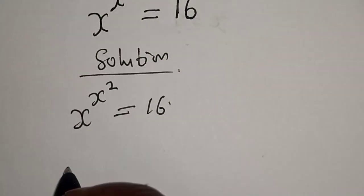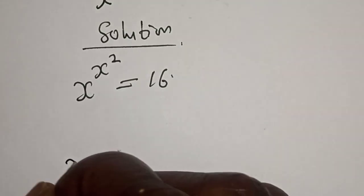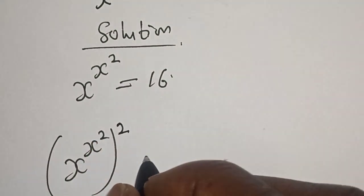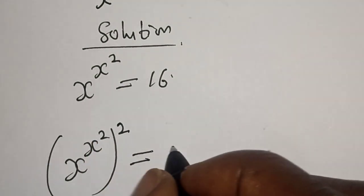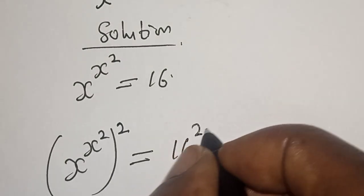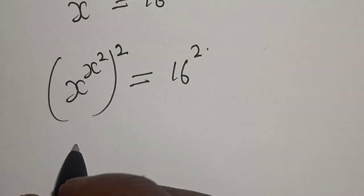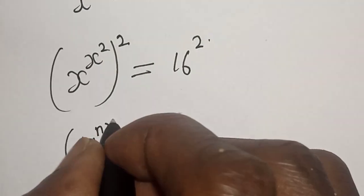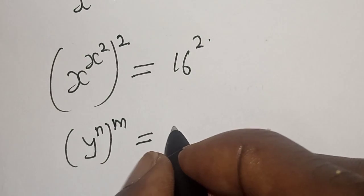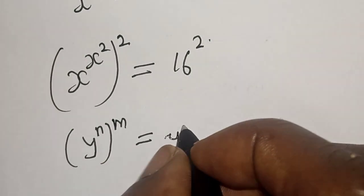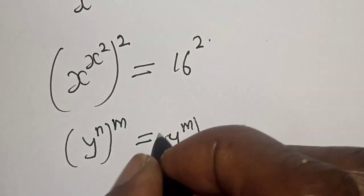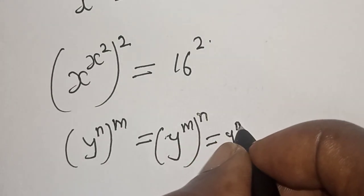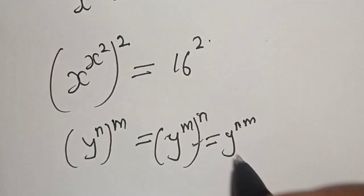Let's square both sides. That is, s raised to the power s squared, all squared, is equal to 16 squared. Note that if you have y raised to the power n raised to the power m, this is equal to y raised to the power m times n. Now we make use of this identity.